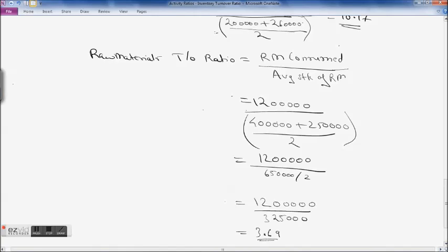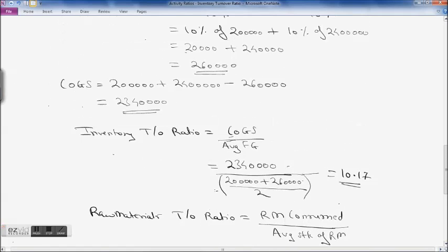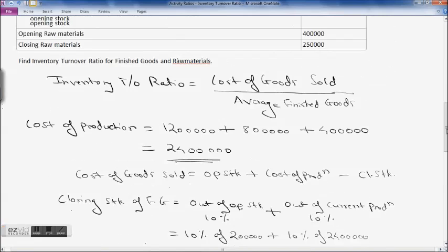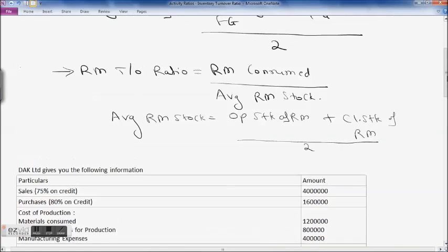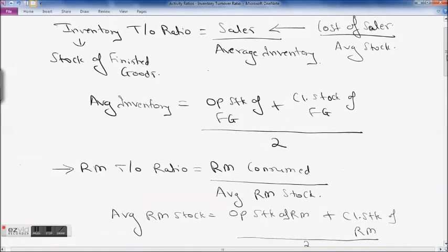This was all about inventory turnover ratio. We calculate average inventory in this case because the inventory keeps changing on a daily basis. To have a realistic approach, we calculate average inventory instead of closing stock of inventories for the inventory turnover ratio.